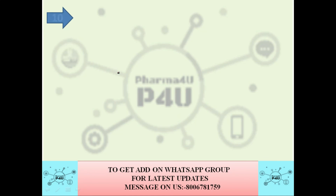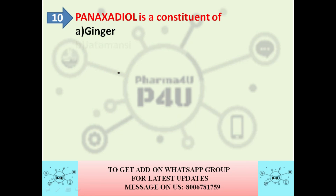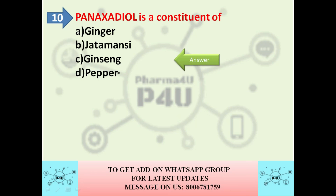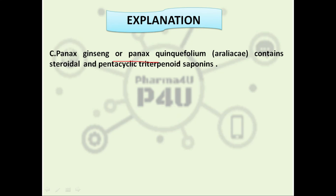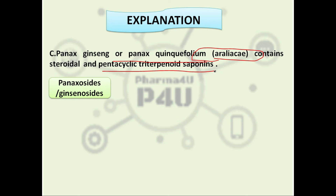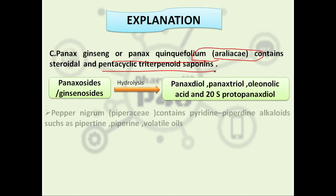The next and last question of this video is: Panaxodiol is a constituent of — option A is ginger, option B is jatamansi, option C is ginseng, option D is pepper. The correct answer is ginseng. Panax ginseng or Panax quinquefolium, family Araliaceae, contains steroidal and pentacyclic triterpenoid saponins. On hydrolysis, panaxosides or ginsenosides yield panaxadiol, panaxatriol, oleanolic acid, and 20S-protopanaxadiol.